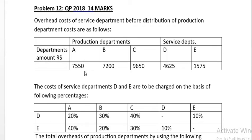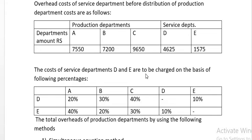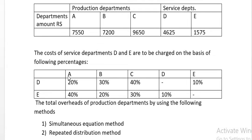Production department amounts given: A department 7,550; B department 7,200; C department 9,650; D department 4,625; and E department 1,575. The cost of service departments D and E are to be charged on the basis of the following percentages. For service department D: A is 20%, B is 30%, C is 40%, and E is 10%. For service department E: A is 40%, B is 20%, C is 30%, and D is 10%.